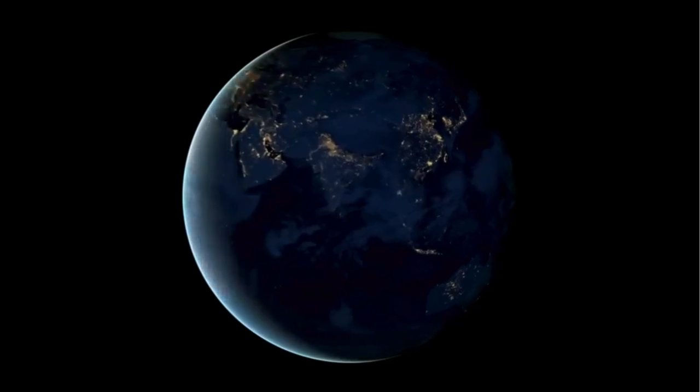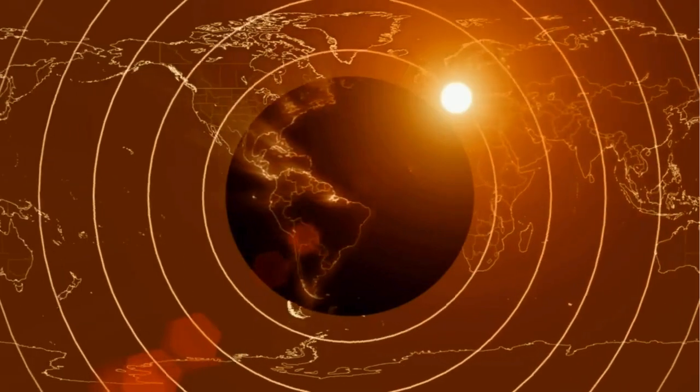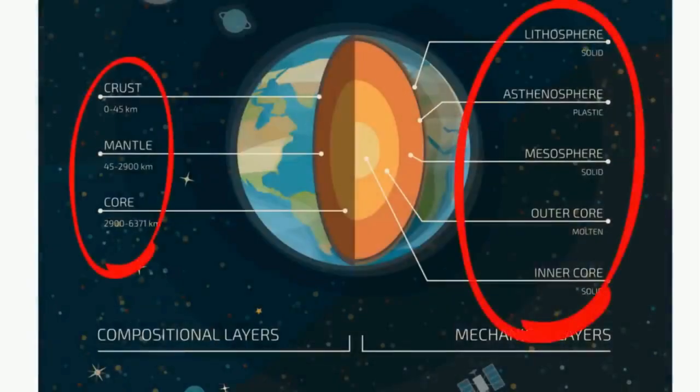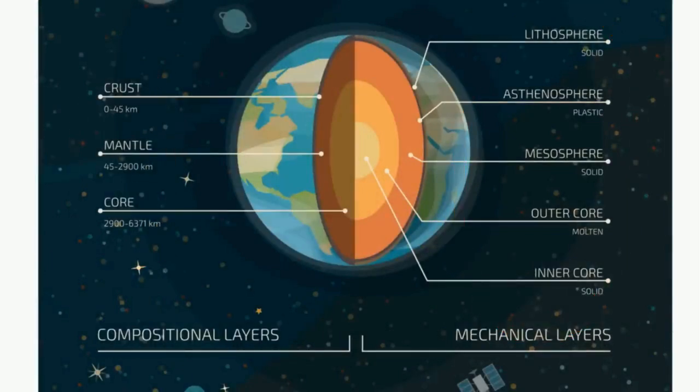Welcome to Moomoo Math and Science. In this video, let's take a look at the layers of the earth based on chemical composition and physical properties. The earth can be divided into three layers based on chemical composition: the crust, the mantle, and the core.